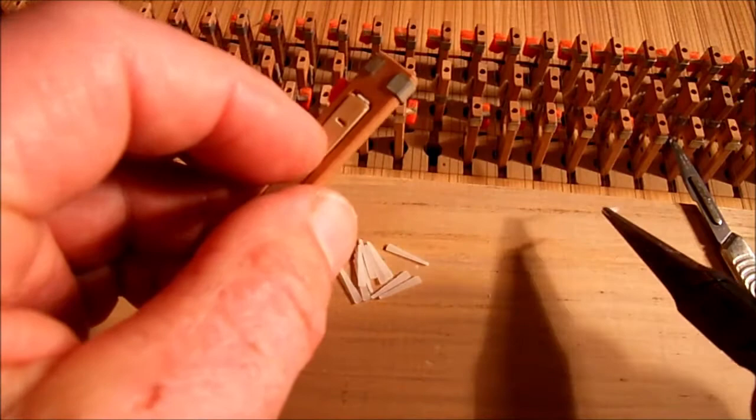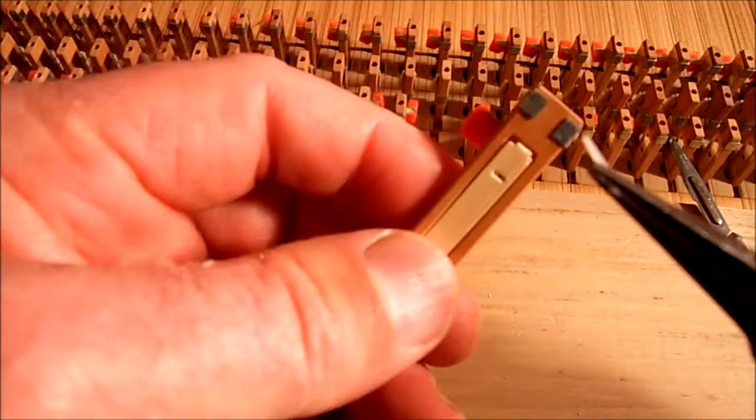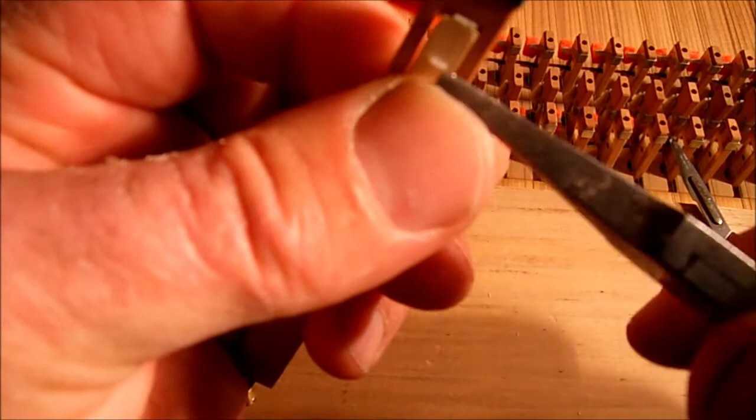The next step is to take a new plectrum, make sure that you've got the smooth side uppermost, and insert it from the back of the jack to the front, edging it in with the long nose pliers, little bit by little bit, until it's nice and firm, bedded in not too tightly.